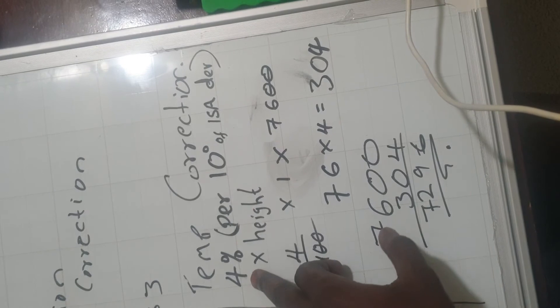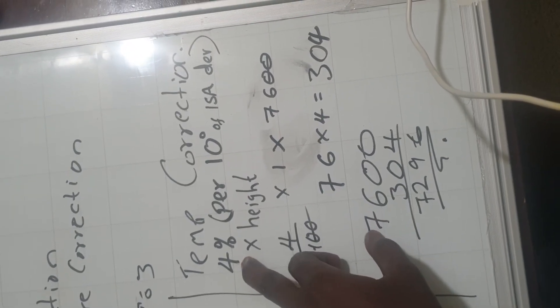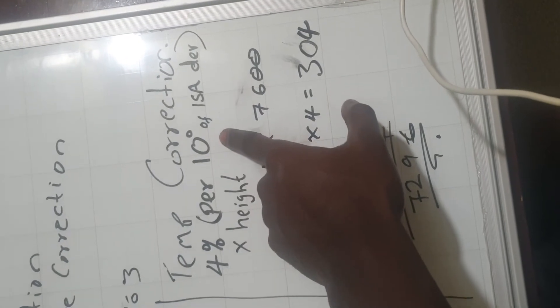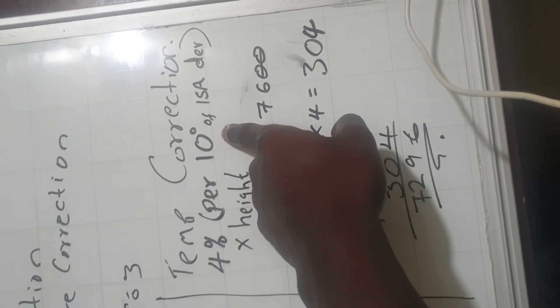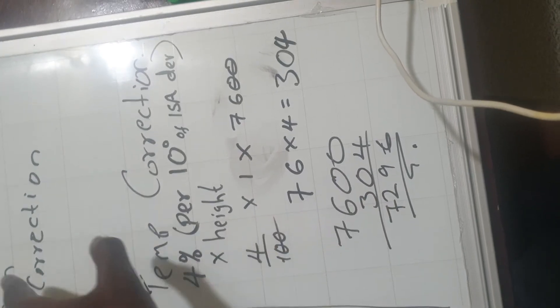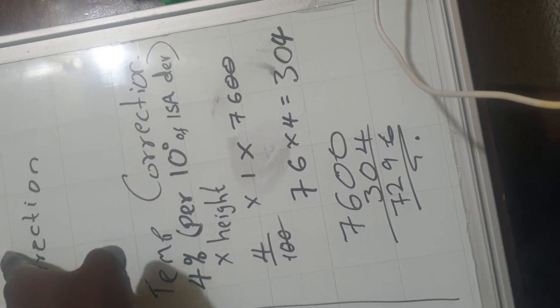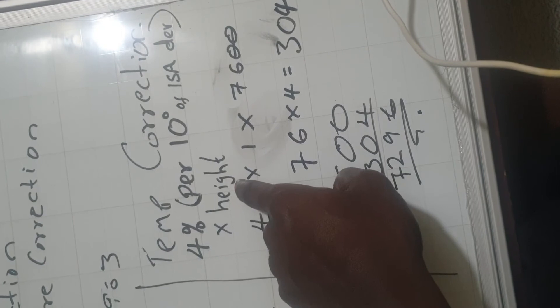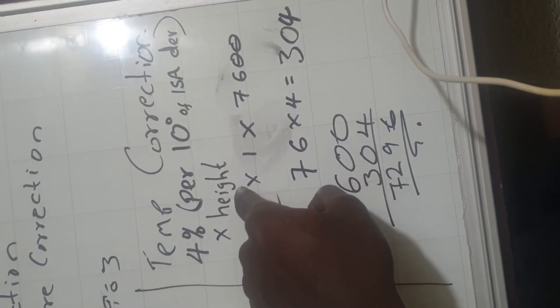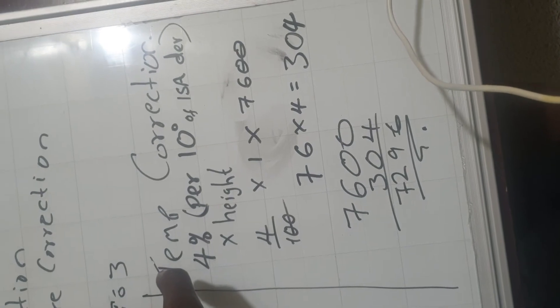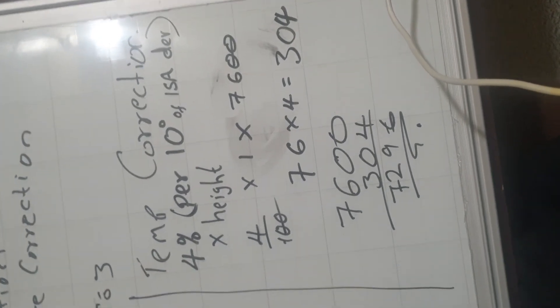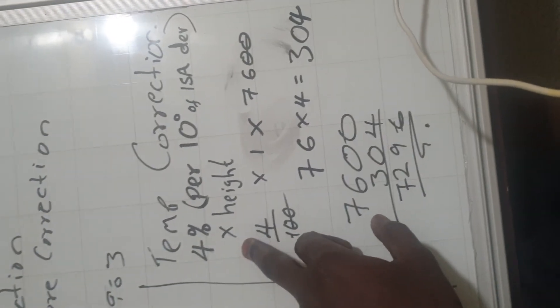So the formula that you're supposed to use is 4%, you apply 4% for every 10 degree deviation from ISA, and then you multiply by the height that you have already corrected for. So please note that this height is not the initial height that you are given, but is the height that you have corrected for after doing the first part, which for our case we found to be 7,600.